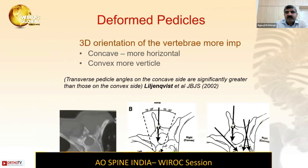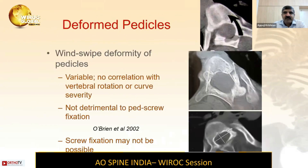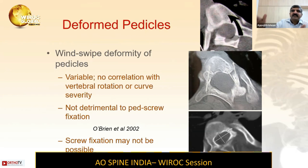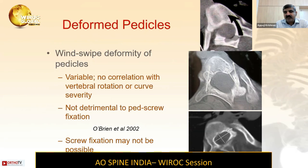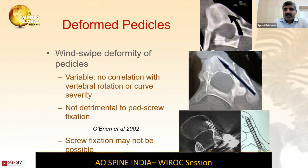Another problem is the wind-sweep deformity of the pedicles in the thoracic spine, described by O'Brien et al., where both pedicles point in the same direction rather than converging, so you have to insert both screws in the same direction rather than in a converging direction. Screw fixation in some of these cases may not be possible because the length on the convex side will be much more and you will have medial penetration regardless of insertion direction. In such situations, you can use an out-in-out technique.